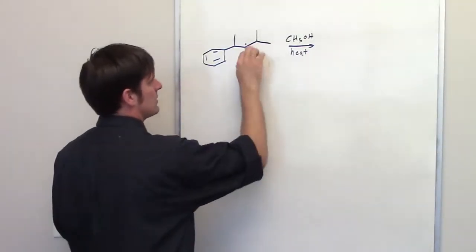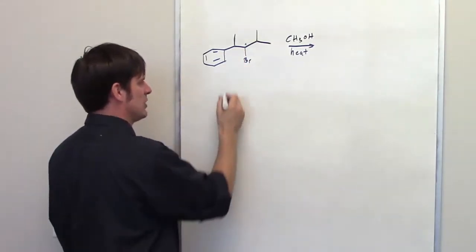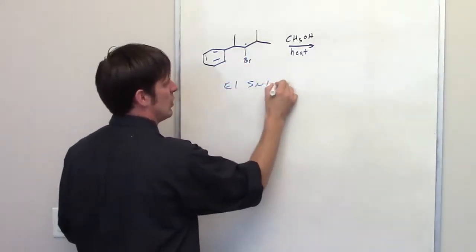It's going to be secondary because it's got a carbon to the right and a carbon to the left, which means it could be E1, SN1, E2, or SN2.